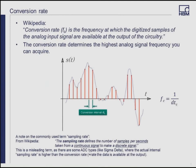A little background on the conversion rate or sampling rate: it's the frequency at which digitized samples of an analog signal are available to the output of the circuitry. Looking at this chart, the blue line signifies an analog signal, and the points with red bars drawn down from them represent the sample rate or conversion rate. You can see there's a conversion interval — the time between two samples. This sampling rate defines the number of samples per second taken from a continuous signal to make a discrete signal. Note that for some ADC types like sigma-delta, the internal sampling rate is higher than the conversion rate, which can be confusing.